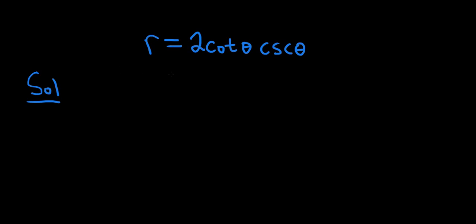So a good first step is to rewrite everything. We can start by writing cotangent and cosecant in terms of more familiar functions.